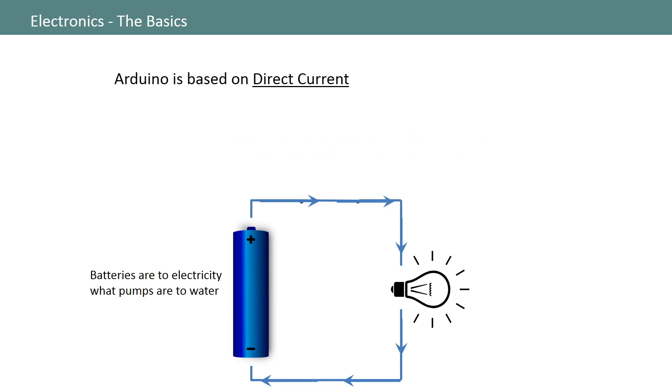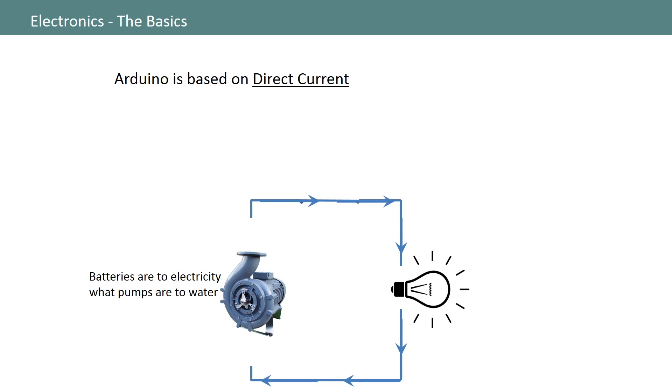Now we can start talking about how DC current flow is a lot like water flow. In fact, if we were to draw an analogy to an engineered water system, we could say that batteries are to electricity what pumps are to water. So let's replace our battery with a pump.